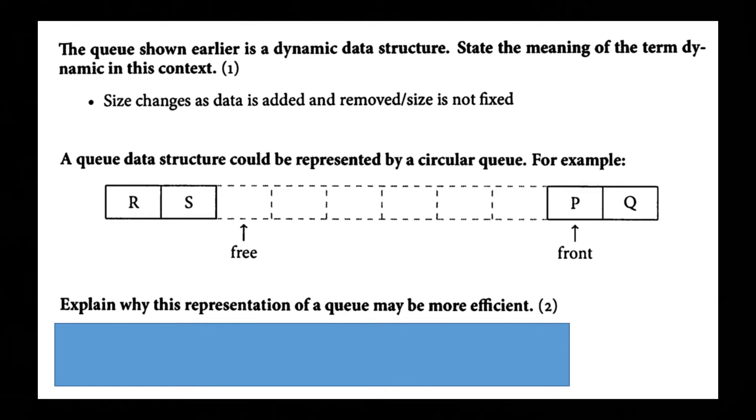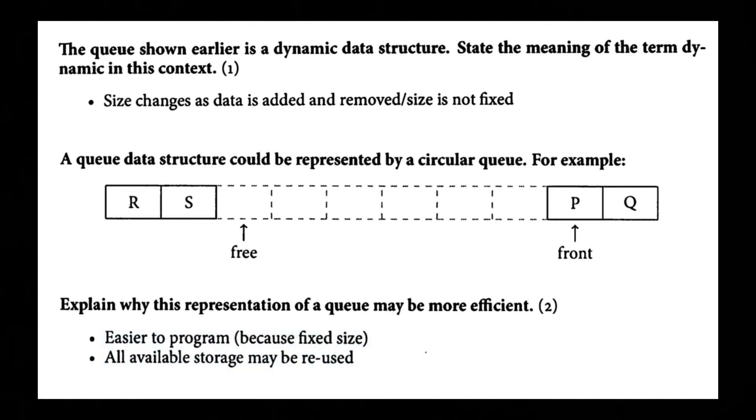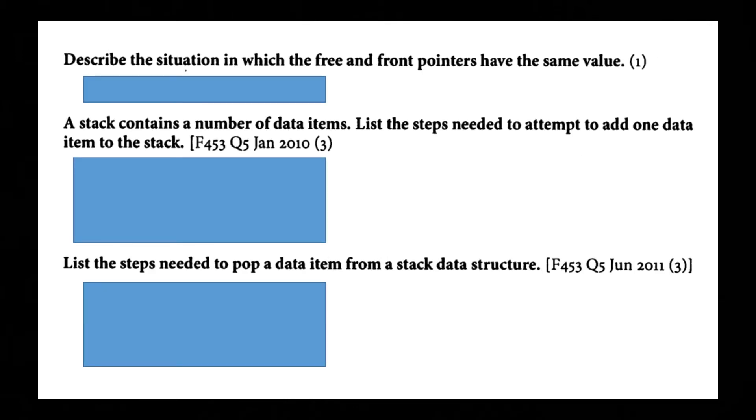A queue data structure could be represented by a circular queue. For example, R, S then free space. Then loads of other spaces. Then there's P which is the front of the queue. Explain why this representation of a queue may be more efficient. Easier to program because it is a fixed size. All available storage may be reused. Describe the situation in which the free and front pointers have the same value when the queue is empty.